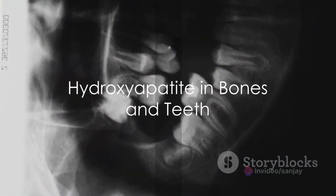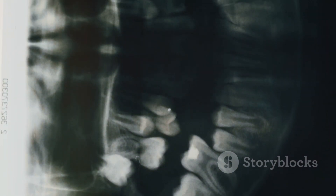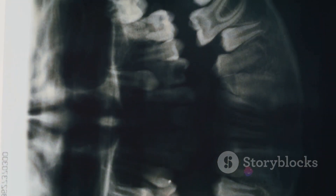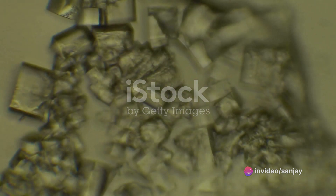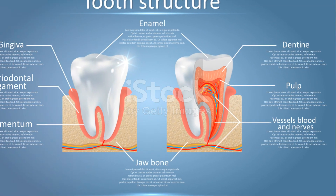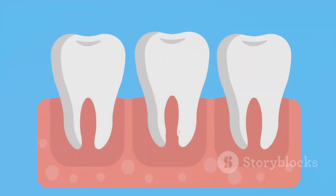Hydroxyapatite is present in bones and teeth. Bone is made primarily of HA crystals interspersed in a collagen matrix; 65–70% of the mass of bone is HA. Similarly, HA is 70–80% of the mass of dentin and enamel in teeth. In enamel, the matrix for HA is formed by amelogenins and enamelins instead of collagen.